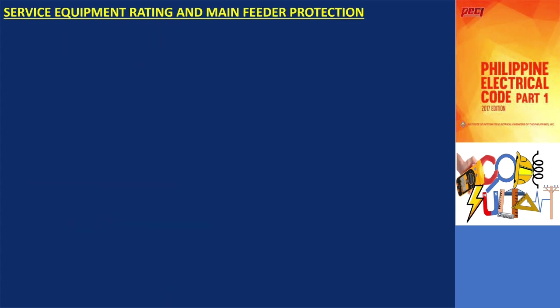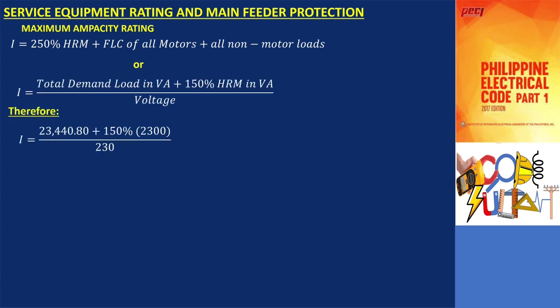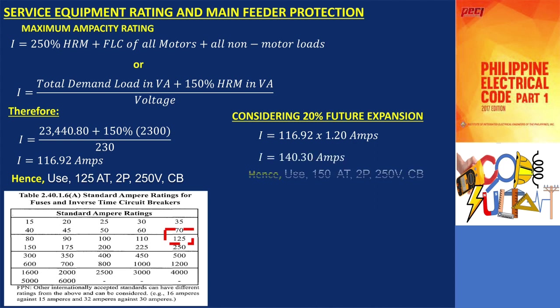For feeder protection and service equipment, the maximum ampacity equals 23,440.80 volt amperes plus 150% of 2,300 volt amperes, divided by 230 volts. This results in a maximum ampacity of 116.92 amperes. Using standard ampere ratings, a 125-ampere trip circuit breaker is selected. Considering 20% future expansion, we multiply 116.92 by 1.20, which gives 140.30 amperes. Hence, use a 150-ampere trip circuit breaker.